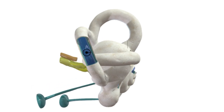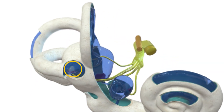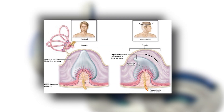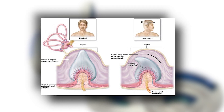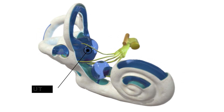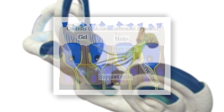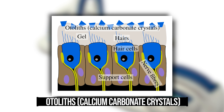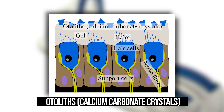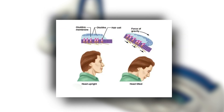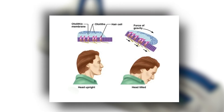The semicircular canals are filled with endolymph and contain a sensory organ called the crista ampullaris. The crista ampullaris has hair cells similar to those in the cochlea, and their movement in response to fluid motion is crucial for detecting rotational movements of the head. The otolith organs — the utricle and saccule — detect linear acceleration and gravity. Inside these organs, small calcium carbonate crystals called otoliths sit on top of a gelatinous layer covering the hair cells; movement of the head causes the otoliths to shift, bending the hair cells and sending signals to the brain about head position and linear motion.